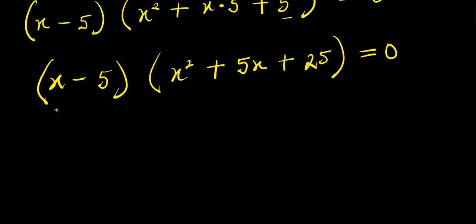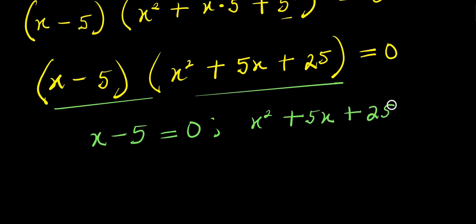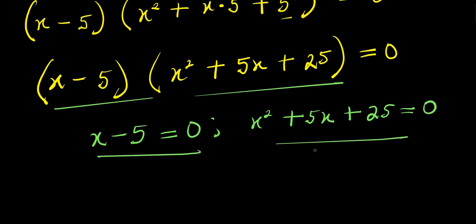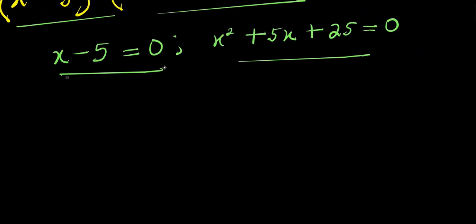So here we equate each of these factors to zero: x minus five equals zero, and x squared plus five x plus twenty five equals zero. Solving the first equation, if x minus five equals zero, we have x equals five — that is our first solution, x₁.